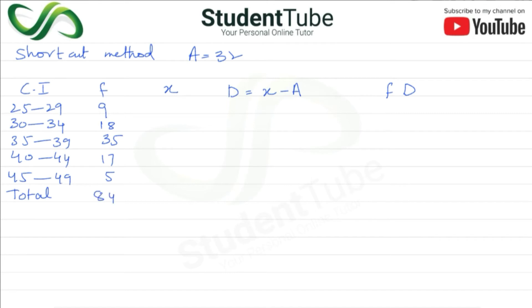x values are the same as before: 27, 32, 37, 42, 47. Now d = x − a: 27 − 32 = −5; 32 − 32 = 0; 37 − 32 = 5; 42 − 32 = 10; 47 − 32 = 15.